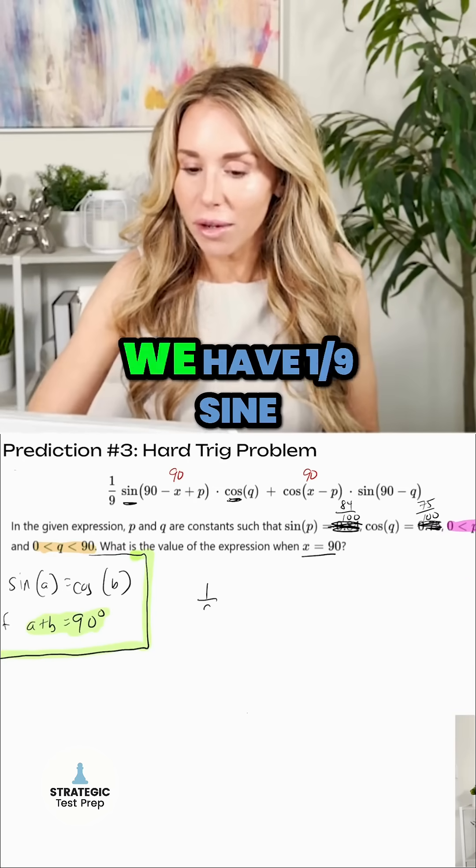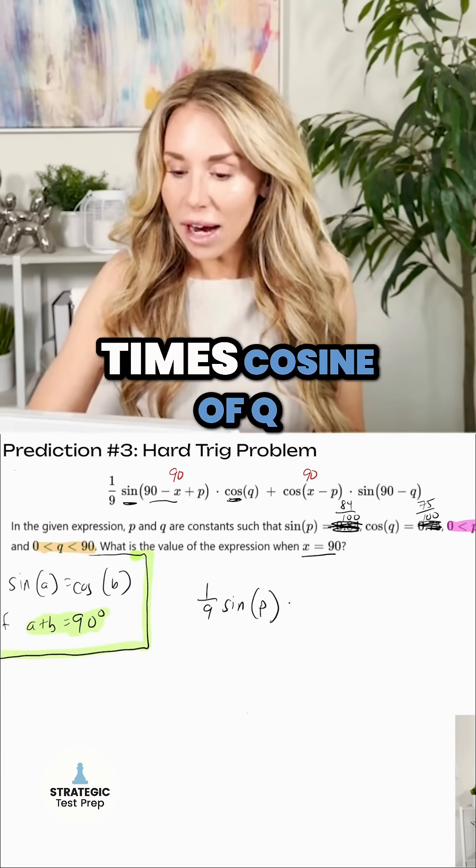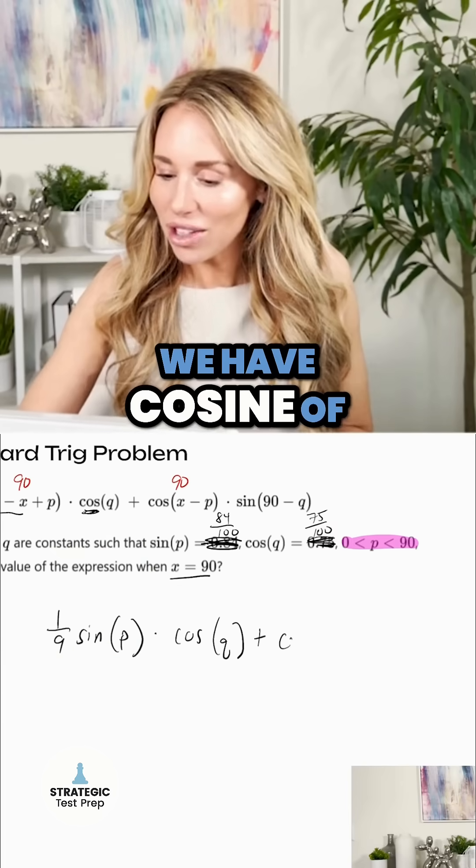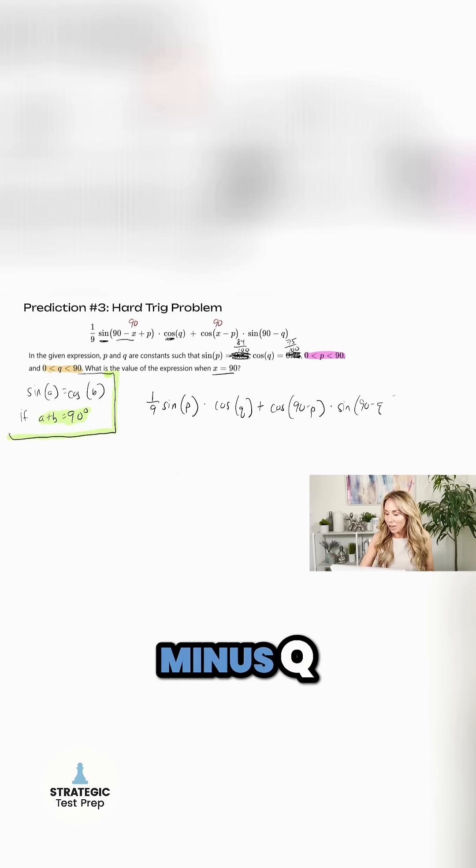Substitute in 90 for X. We have one ninth sine. Now 90 minus 90 is zero. So I'll just have sine of P times cosine of Q. We have cosine of 90 minus P times sine of 90 minus Q. Great.